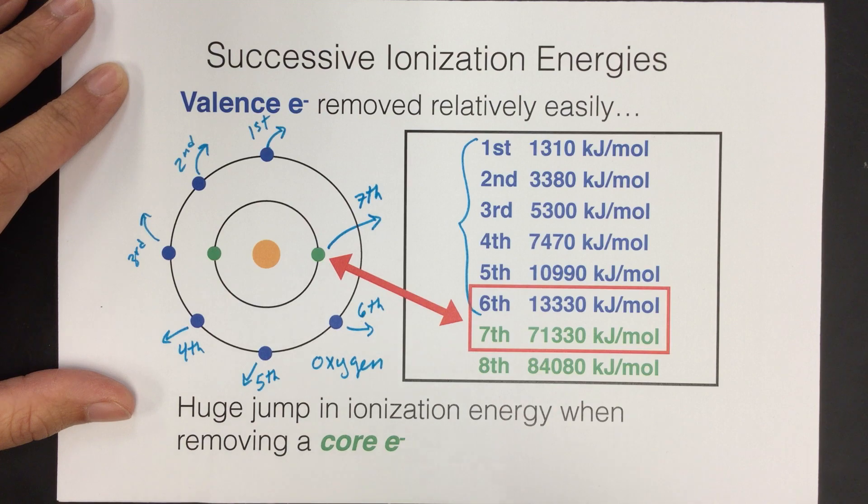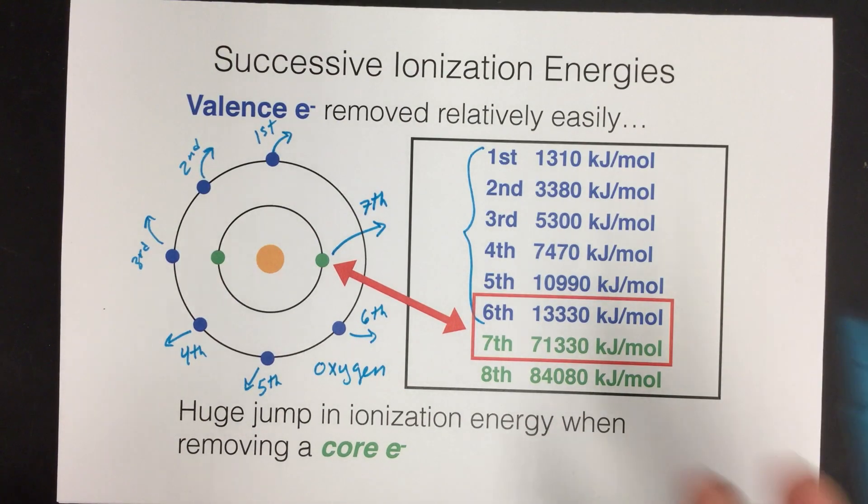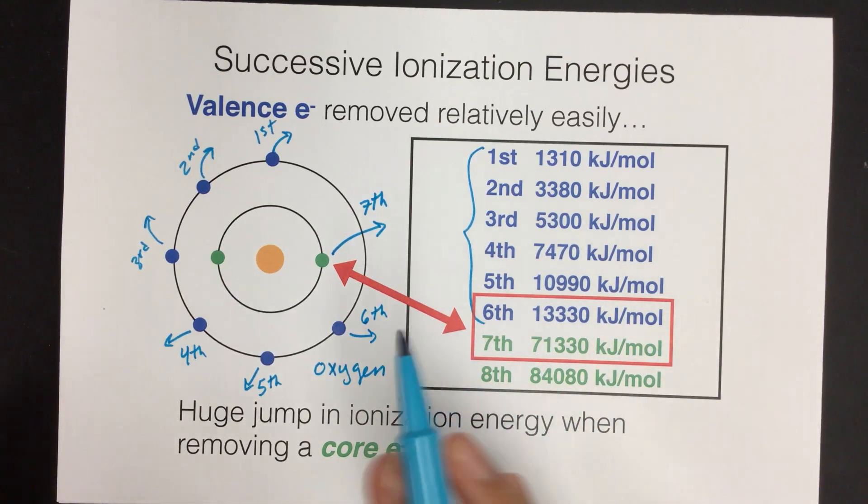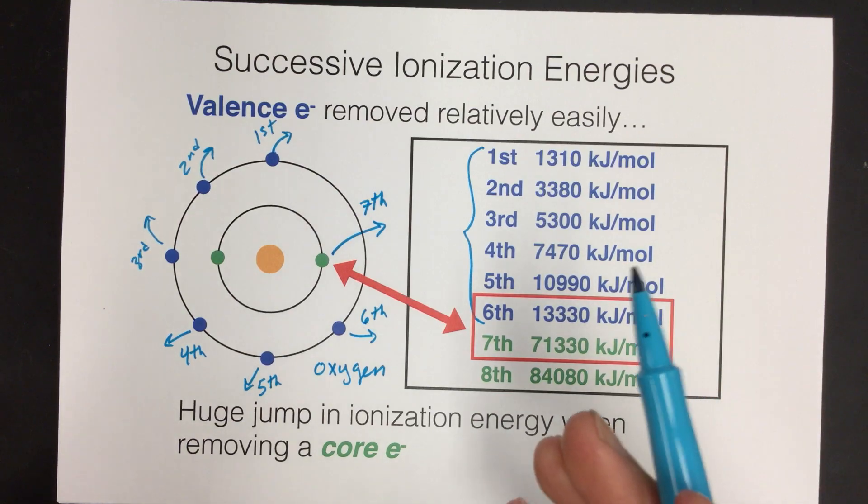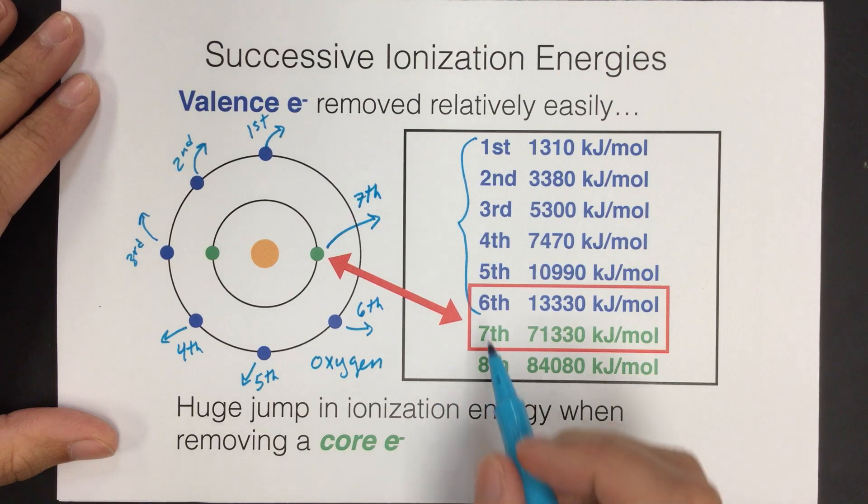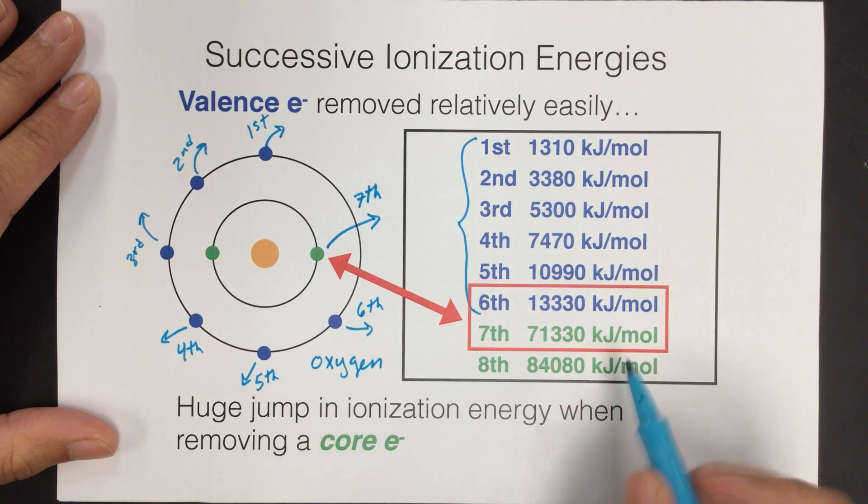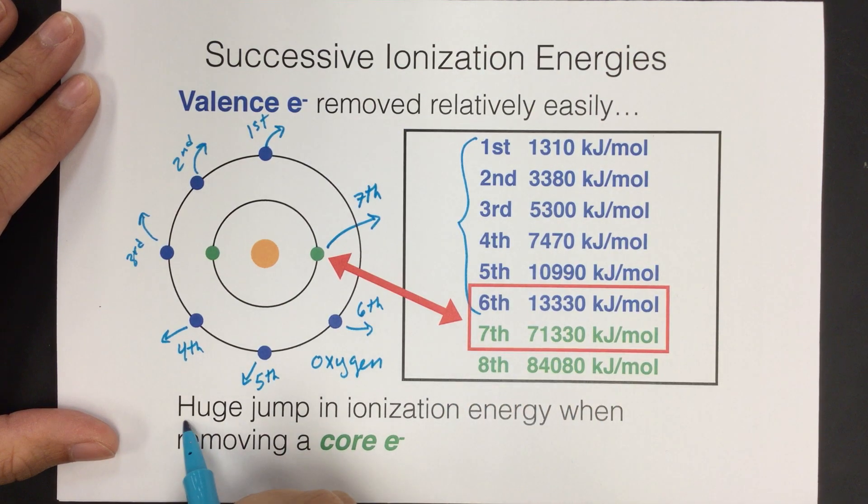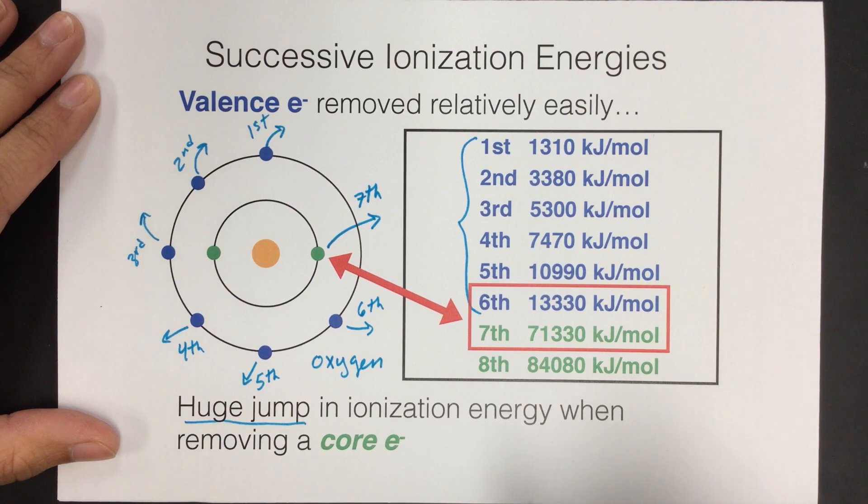And atoms do not want to give up their core electrons because they already feel like they are complete. Whether it's the first energy level or the second or the third, if that's a core area, just inside the valence shell, then it does not want to get rid of those electrons. And so once we try to break into those core electrons, we notice this huge jump in ionization energies.